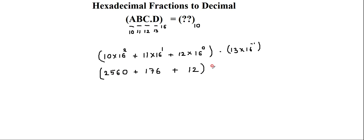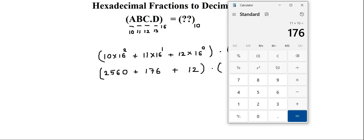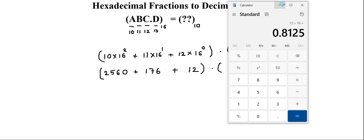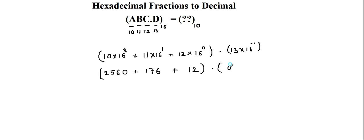I would write this point as it is. Then I have 13 into 16 to the power minus 1. What I do is I would write 13 divided by 16. 13 divided by 16 leads to 0.8125. So it is 0.8125 at the fractional part.